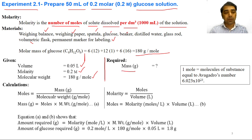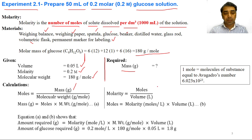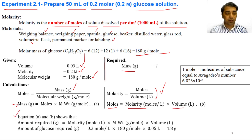We need to find the mass of glucose required to make 50 ml of glucose solution with a final molarity of 0.2 molar. We know that number of moles equals mass divided by molecular weight, and that molarity equals moles per unit volume. Therefore, mass equals molarity multiplied by molecular weight multiplied by volume. The amount of glucose required equals molarity × molecular weight × volume.